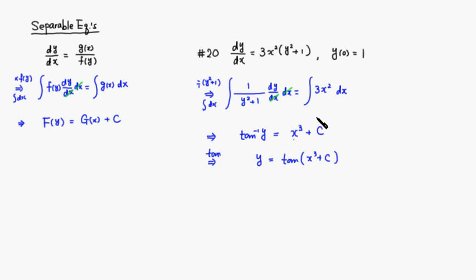Now we can use the initial value condition, initial condition. So we look at y of 0. So plug in 0. So you have tangent of 0 cubed is 0 plus c. So it's just going to be tangent of c. So this is supposed to be equal to 1. Then you have to think about, okay, what angle makes tangent equal to 1. So we know that c is going to be angle pi over 4.